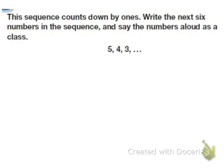So this sequence counts down by ones. Write the next six numbers in the sequence and say the numbers aloud as a class. So we go five, four, three, and our next numbers would be two, one, zero, negative one, negative two, negative three. So that would be my next six sequences.